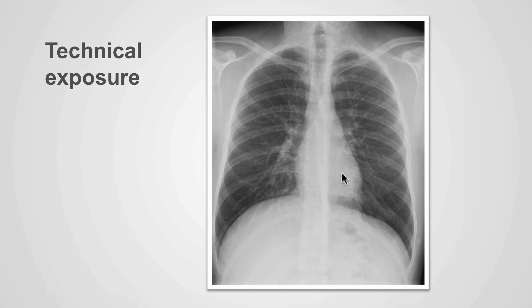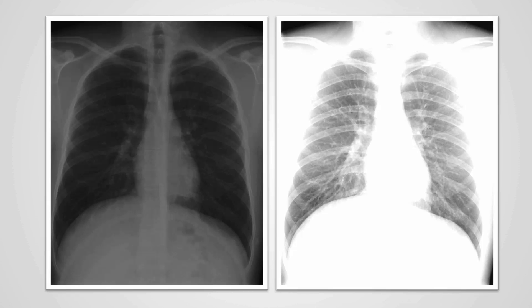When the x-ray is poorly exposed, it can be either over or underexposed. Overexposure causes a loss of anatomical detail because everything looks darker. If this occurs, some information can be extracted by increasing the brightness of the darkened areas of the image.